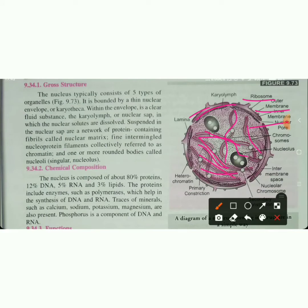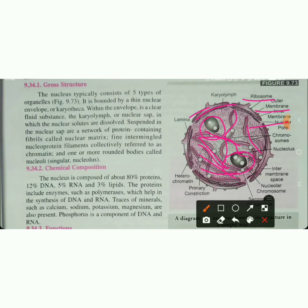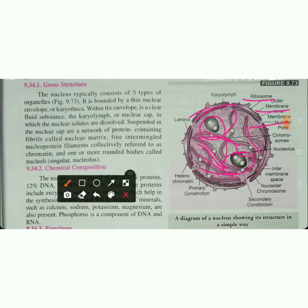Inside the nucleus we have chromosomes and chromatin. These two membranes together are called the nuclear envelope. Inside we also have the nucleolus.